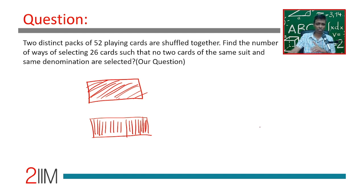No two cards of the same suit and same denomination are selected. That means if I select four of diamonds from here, then four of diamonds from here also should not have been selected. In all of these questions, the key is to make sure that you sequence your process in the right way—you think about...